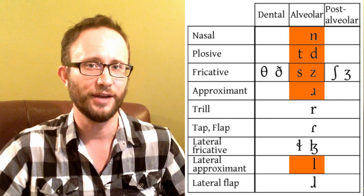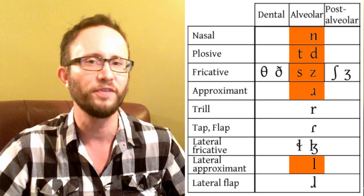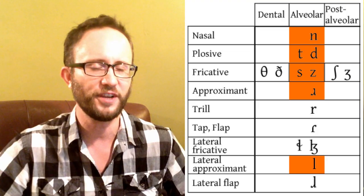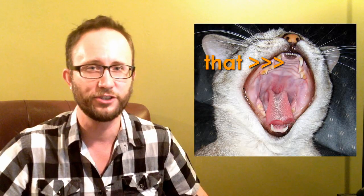Next we have the alveolar sounds — sounds made with your tongue touching your alveolar ridge. If you stick your finger inside your mouth and feel the back of your front teeth, and then feel just behind that, that's your alveolar ridge. It should feel hard and kind of wrinkly. The alveolar sounds in English are T as in top, D as in dog, S as in snake, Z as in zebra, L as in light switch, and R as in really.